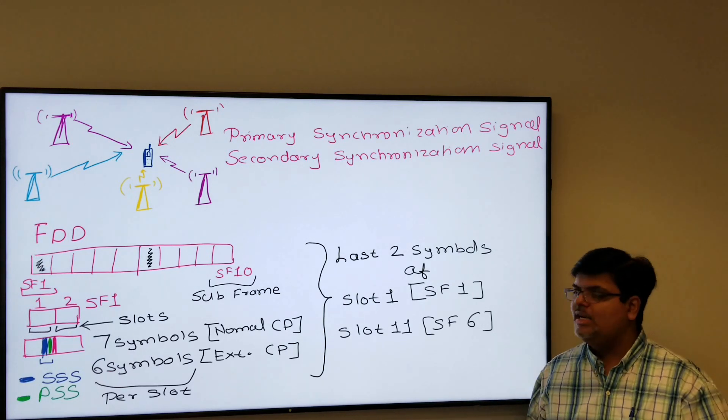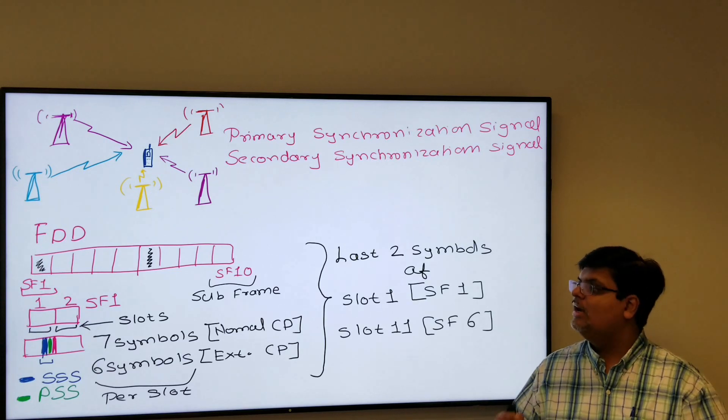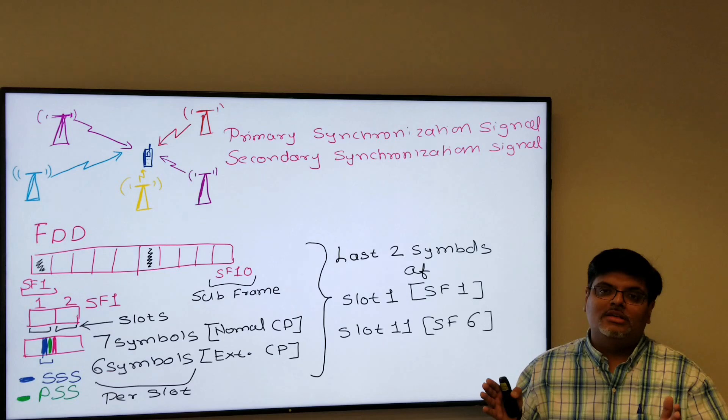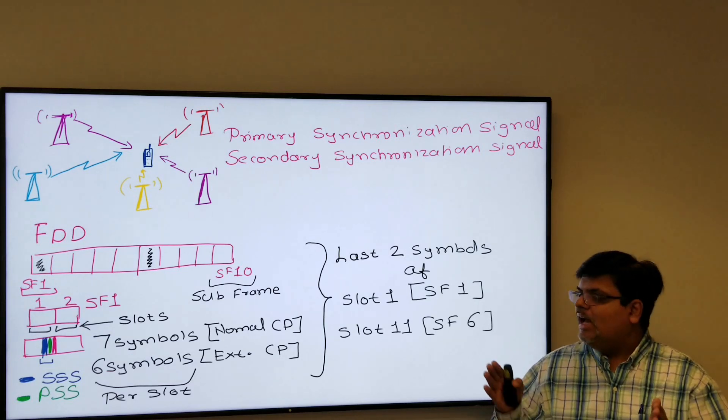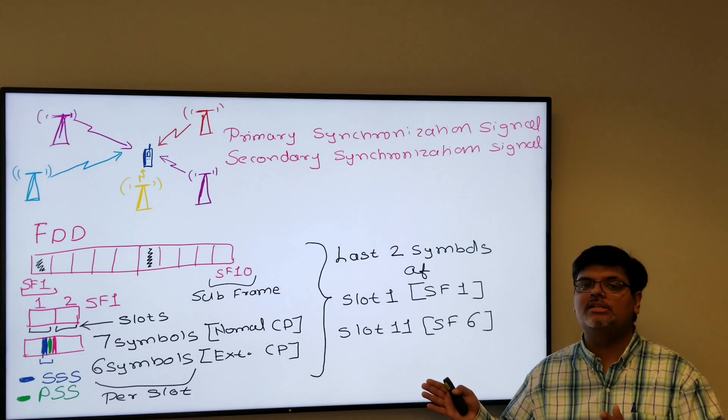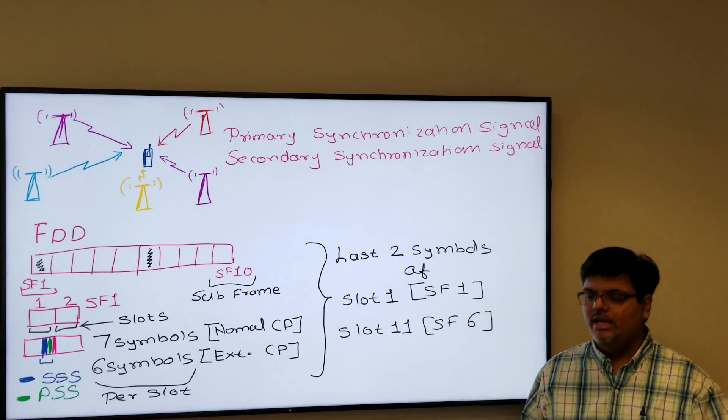That way it determines whether it's on FDD or TDD. And also every slot has certain number of symbols: the normal cyclic prefix has seven symbols and extended cyclic prefix has six symbols. So when UE reads the number of symbols as well, it comes to know what cyclic prefix it is going to use.